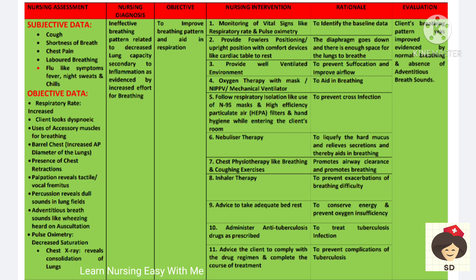We have to monitor vital signs, respiratory rate and pulse oximetry for oxygen saturation. Fowler's positioning should be provided, along with a well-ventilated environment and oxygen therapy with mask. Whenever we are caring for this patient, we have to follow strict respiratory isolation techniques like wearing an N95 mask, HEPA filter, and hand hygiene. These will all prevent cross infection.